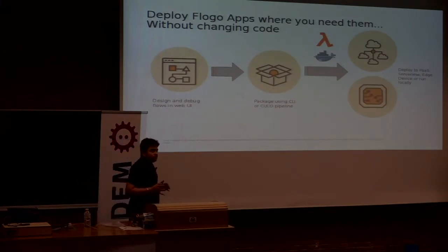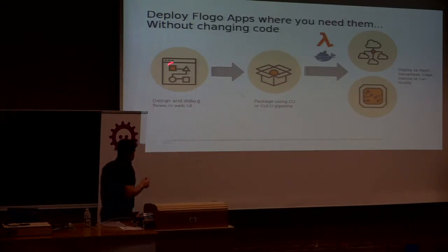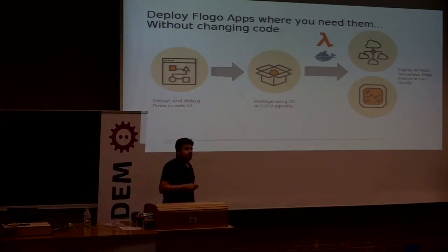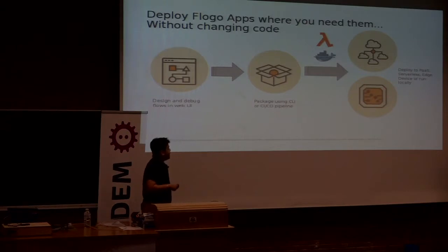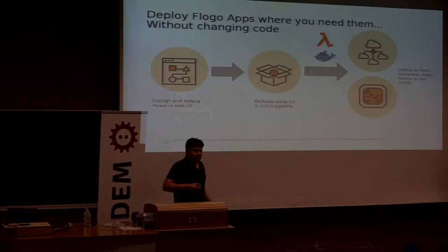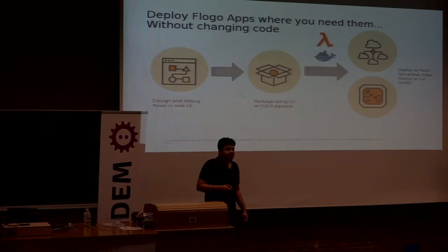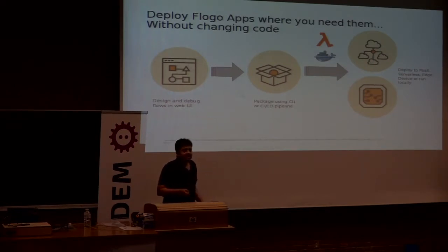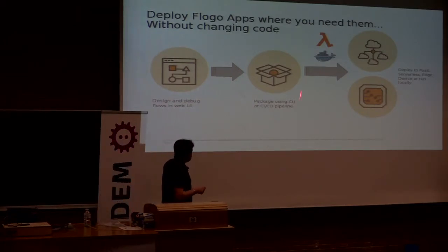As a developer, all you need to focus on is building the logic of your application — that is step one. Once you do that, debug your flows in the web UI. You can utilize the CLI or a CI/CD pipeline to deploy. You have multiple options: deploy into a Docker container, directly export AWS Lambda code and deploy to a serverless environment, or create a binary for your edge devices and run it on microcontrollers. Your coding is completely bifurcated from the target devices where you want to run the application.